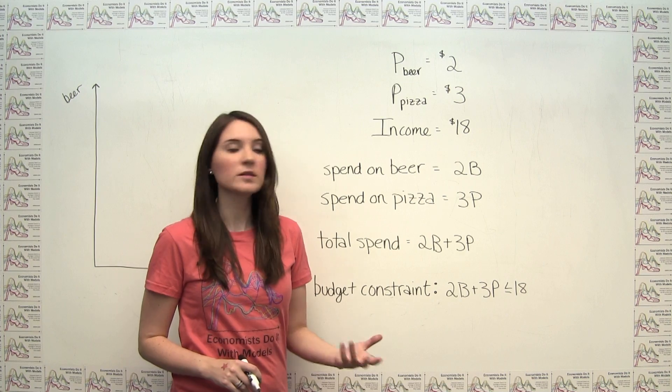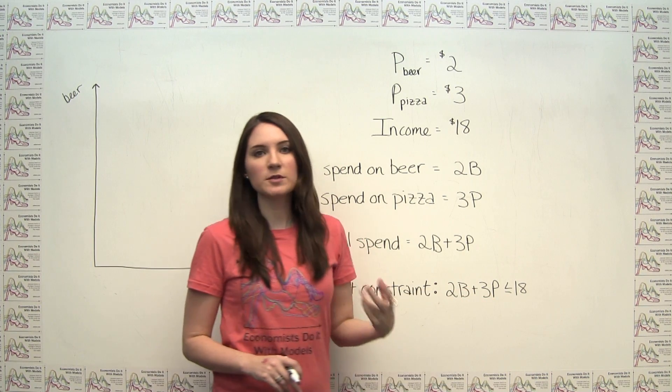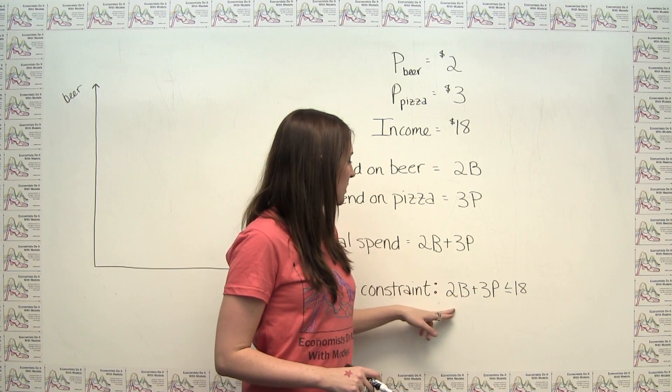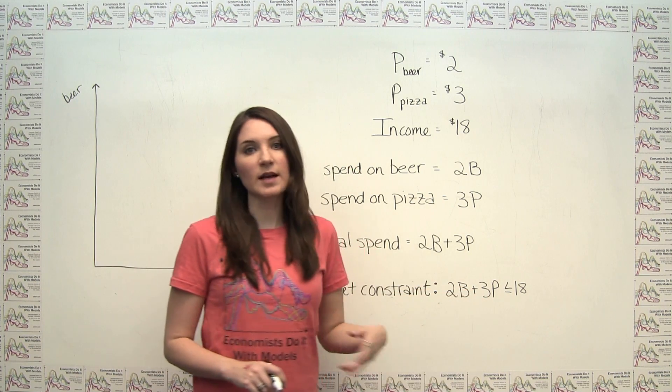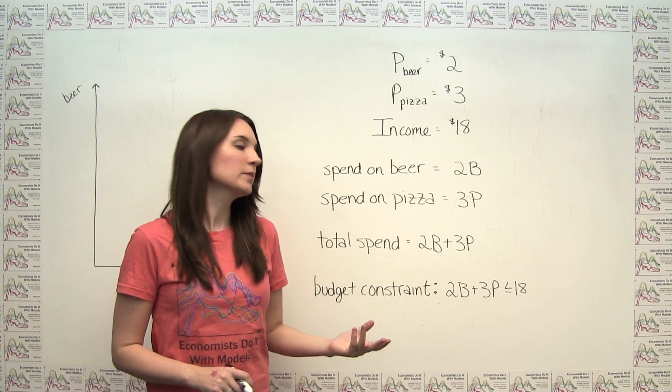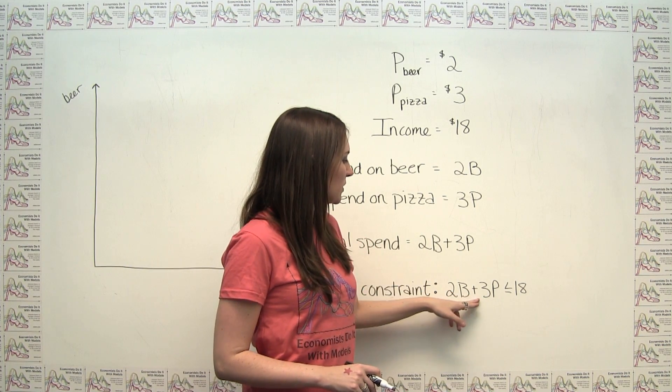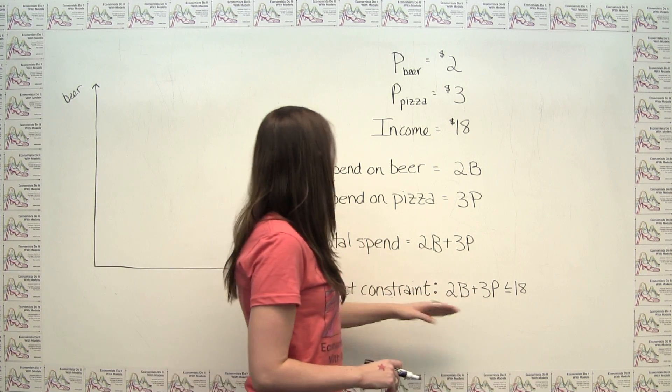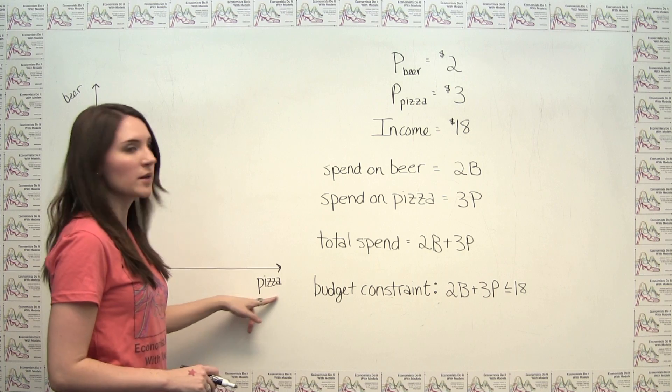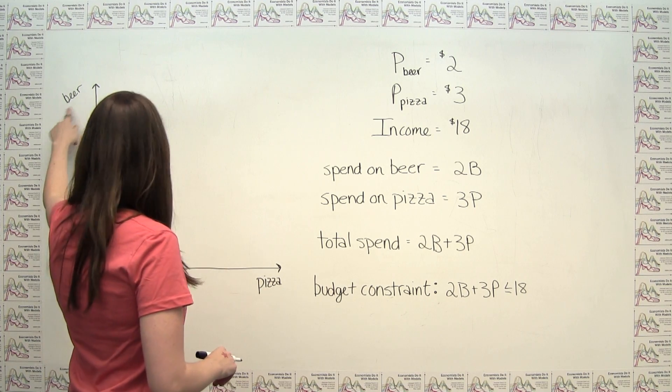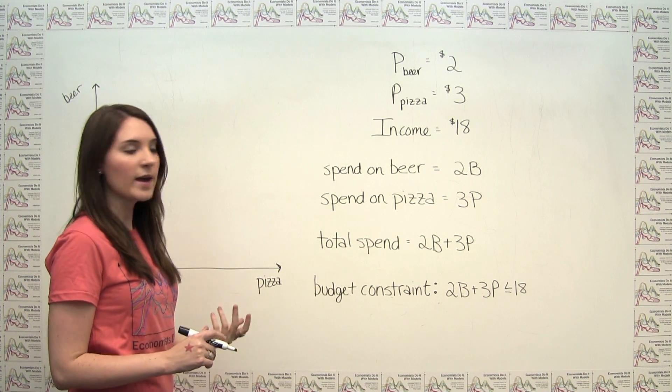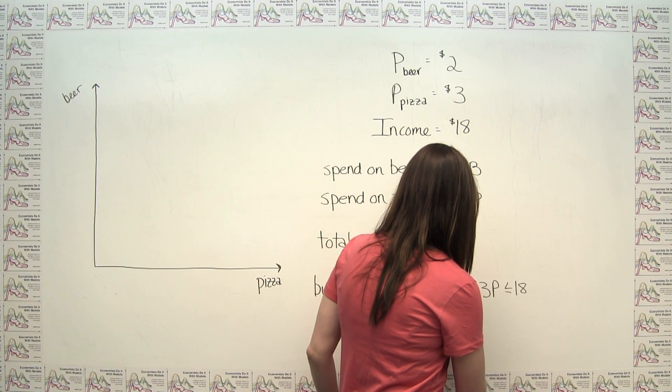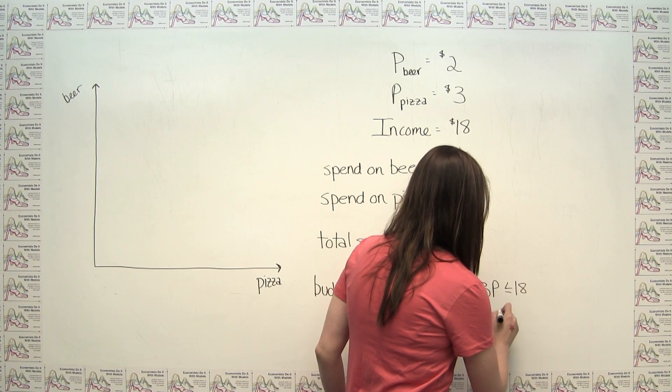In order to think about the budget constraint graphically, it's helpful to graph the boundary of the budget constraint, or in other words, the points where our total spend is exactly equal to our income. So we want to graph the line 2b plus 3p equals 18. And you'll notice here, because pizza is the quantity on the x-axis and beer is the quantity on the y-axis, this just simplifies to graphing the line 2y plus 3x equals 18.